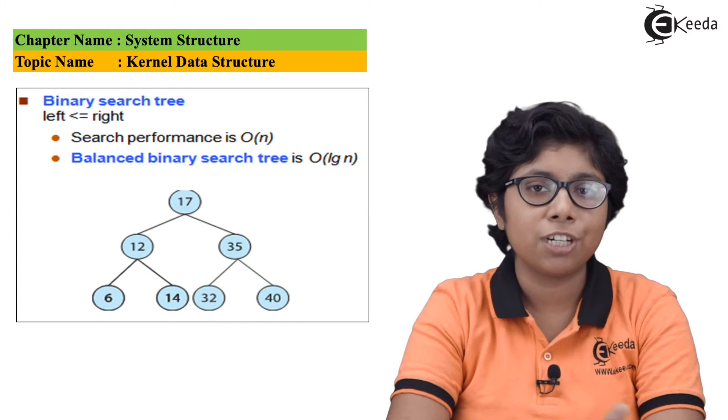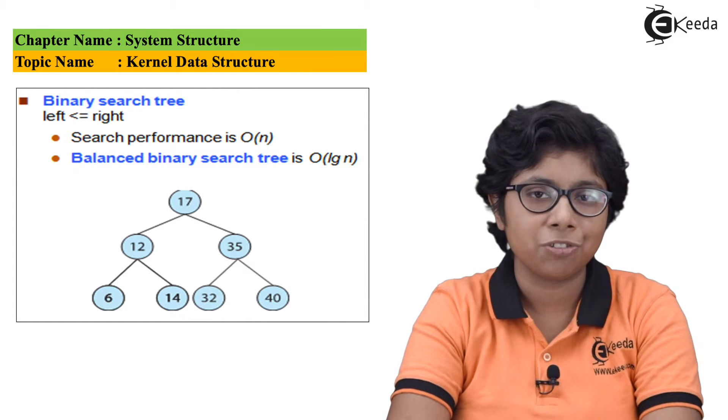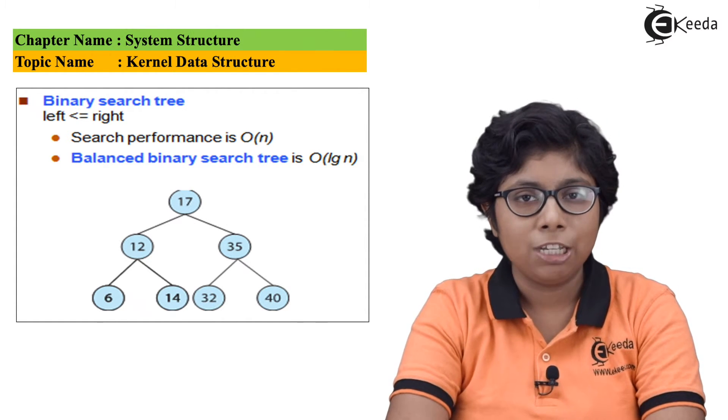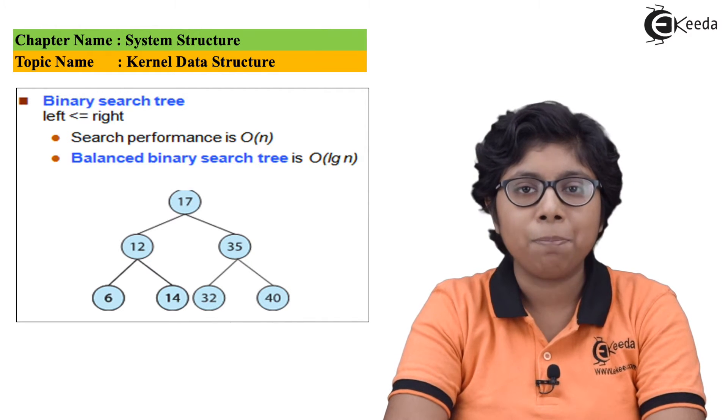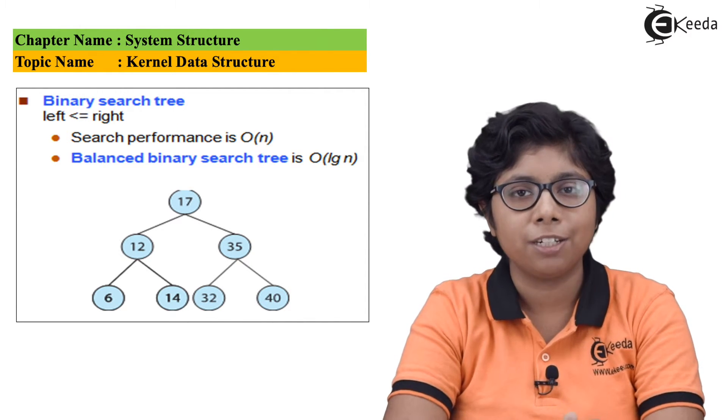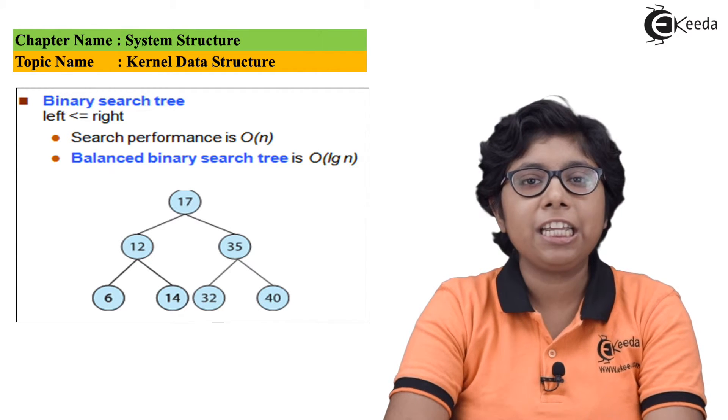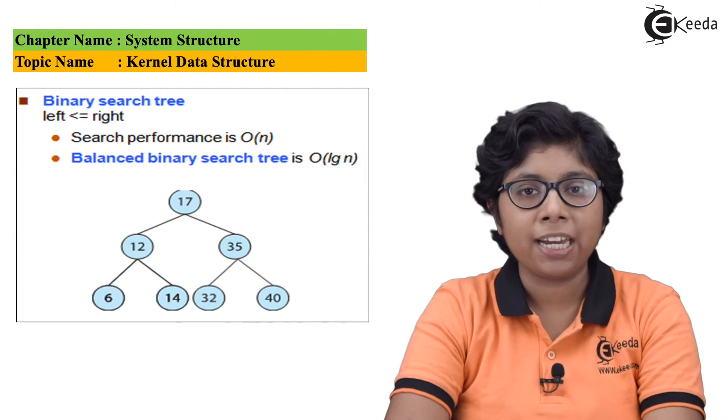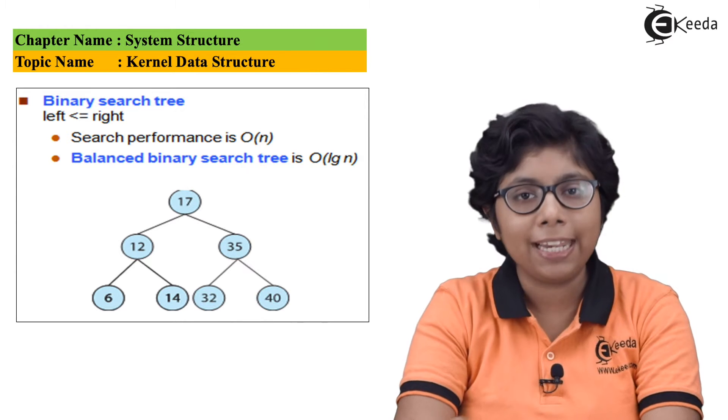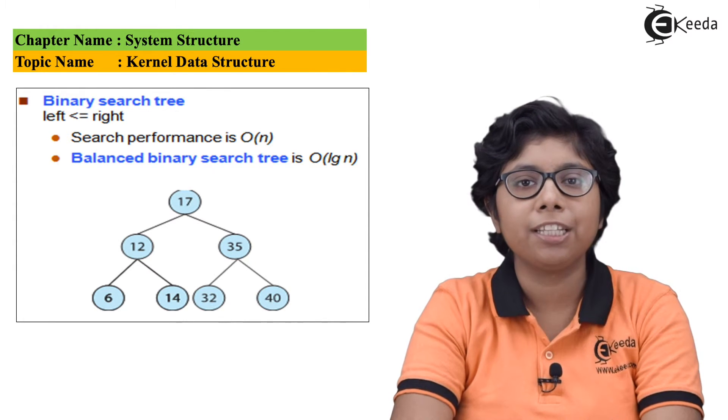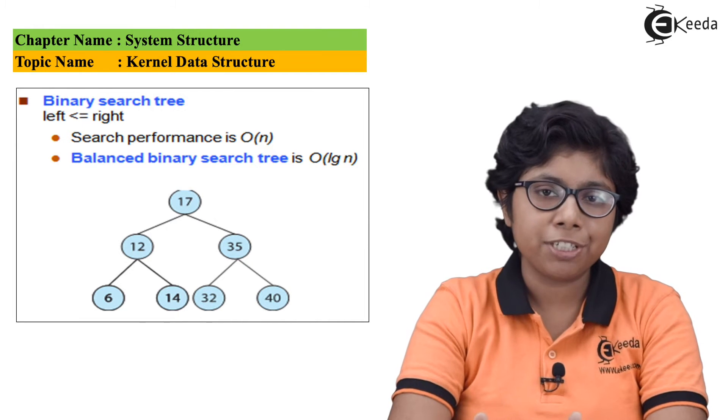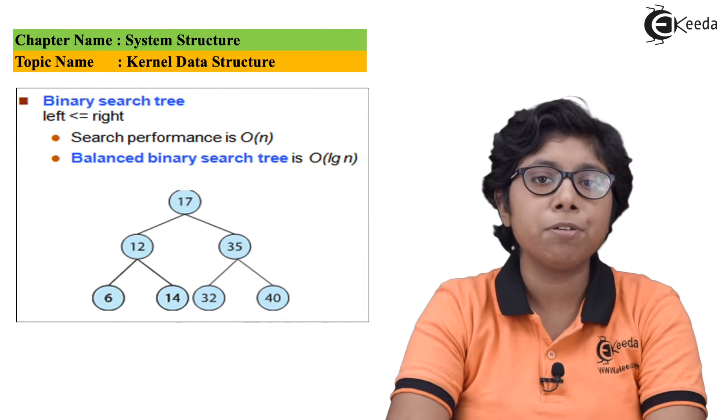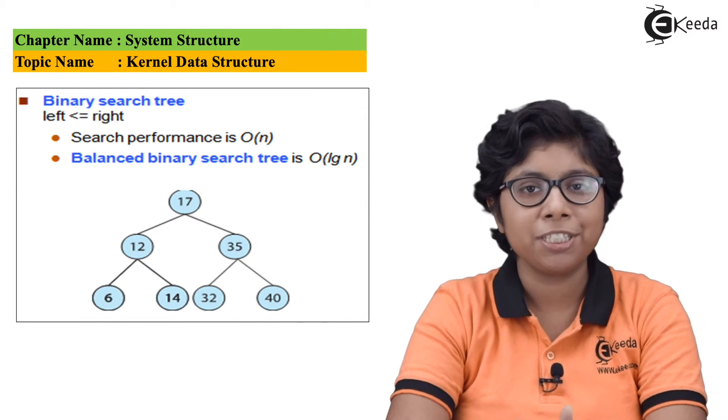But in worst case, the searching algorithm in a binary search tree is Big O of n. We can reduce this instruction cycle by applying a balanced binary search tree. This tree containing N items can have at most log N levels, thus reducing the worst case scenario to Big O of log n function. This tree structure can be used in a CPU scheduling algorithm very efficiently.